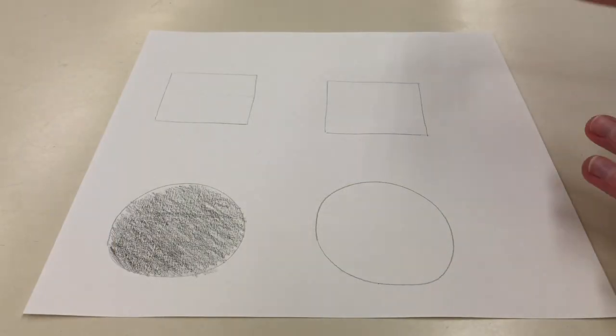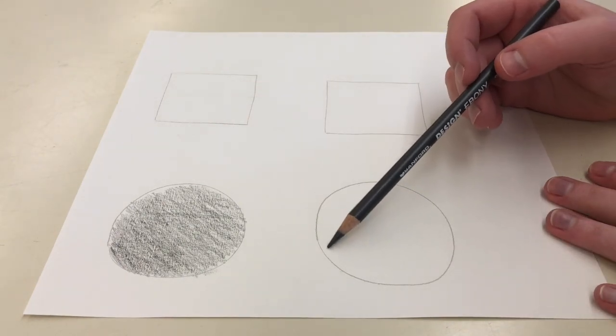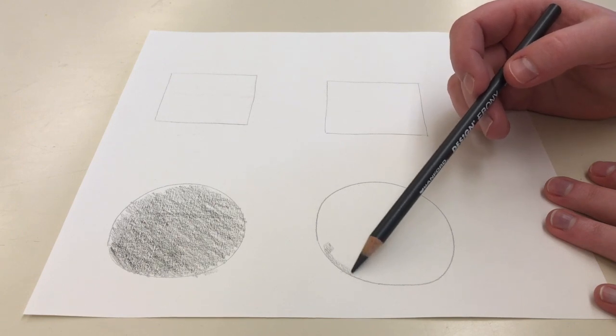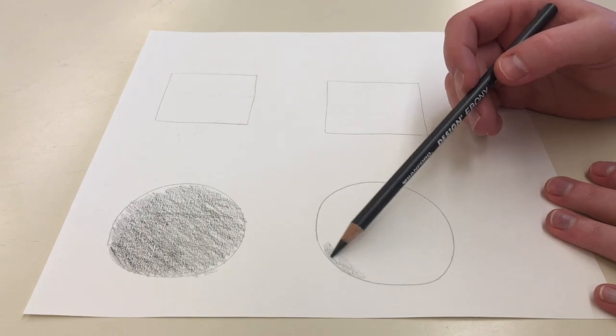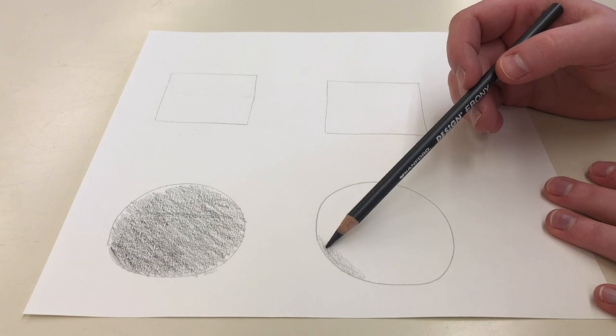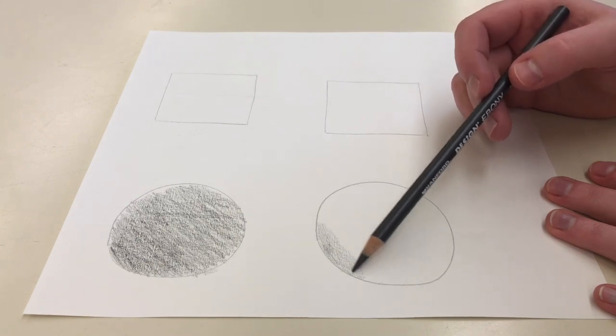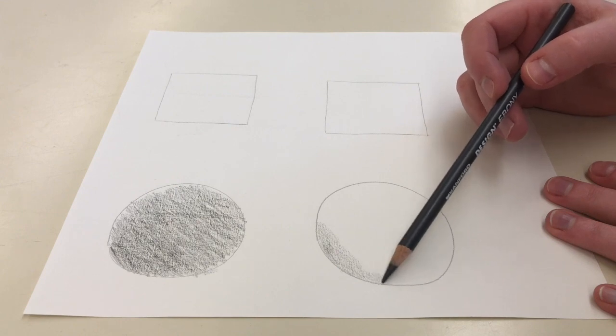Now in this circle I want you to see how I'm using a different technique in order to create value. This technique is what I want you to practice. I apply a light value with small circles which means that my hand is going slower and adding little circles as I move around inside the circle.